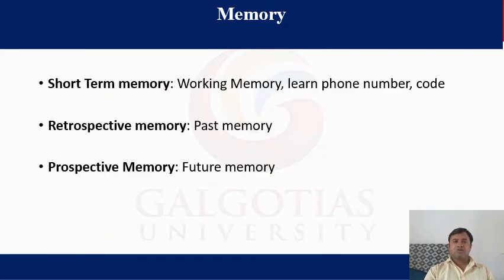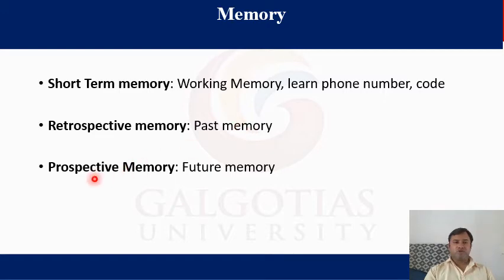Memory can also be divided into short-term memory, also called working memory, which includes recently learned phone numbers, codes, and places. Second is retrospective memory, which includes past memory, and prospective memory, which includes future memory.